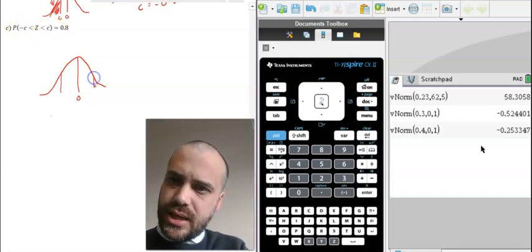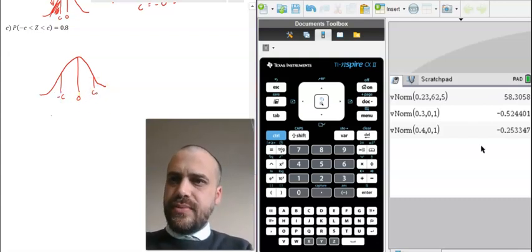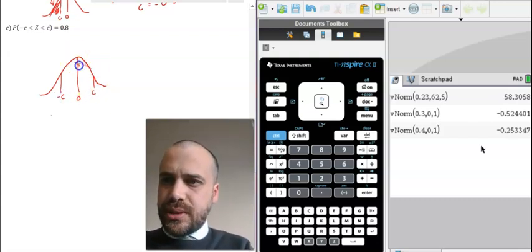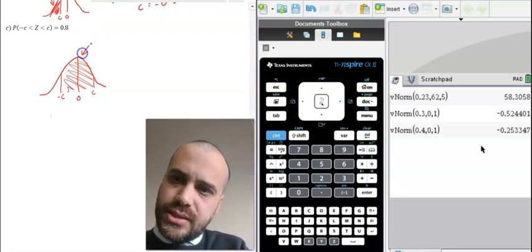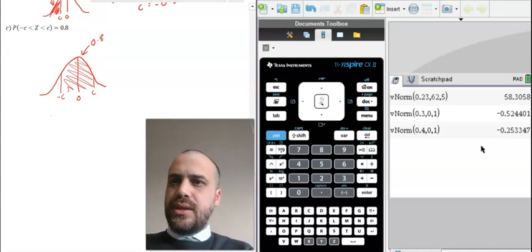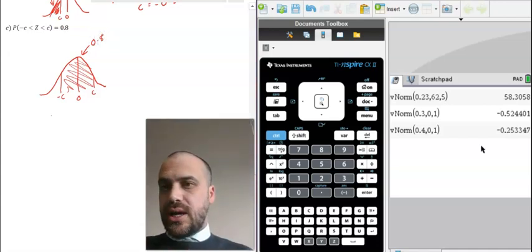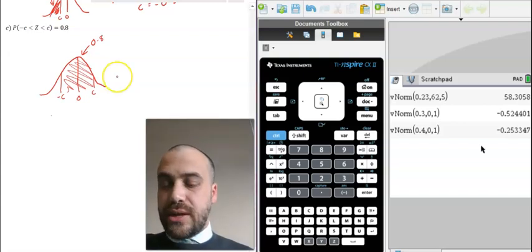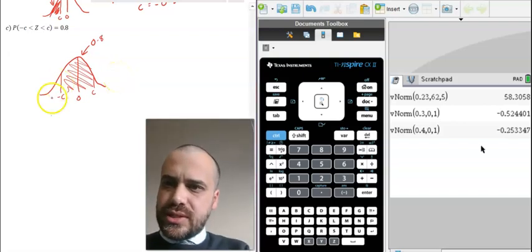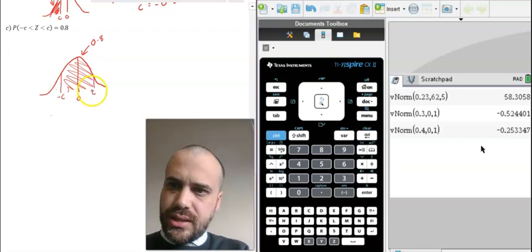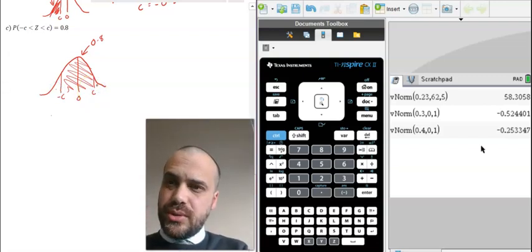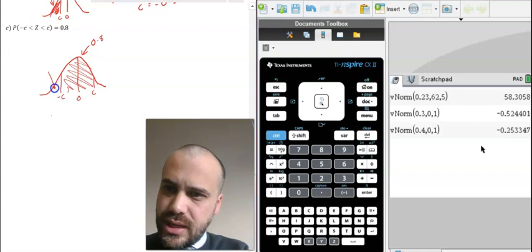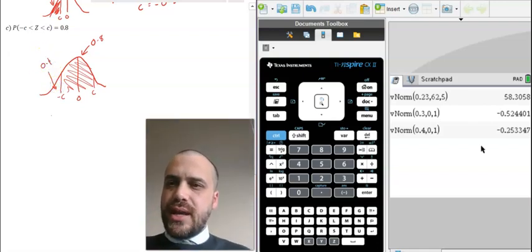So these points are equidistant, negative C and C and we know that the probability that something is between those two values is 0.8. Now, we know that normal distributions are symmetrical. So, the sum of this bit here and this bit here is 0.2 which means that this area here must be 0.1 and now we have enough information to be able to use our calculator.